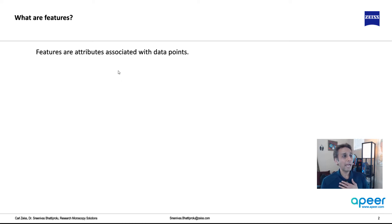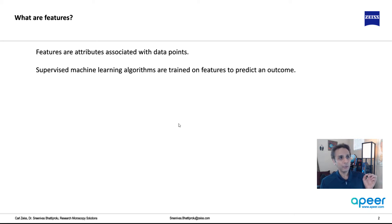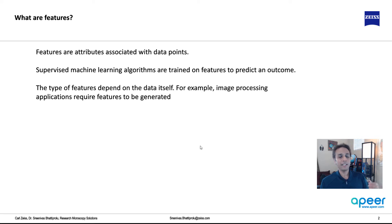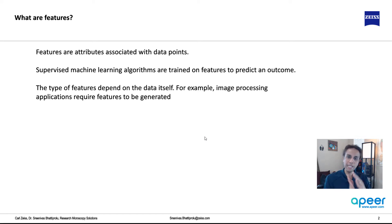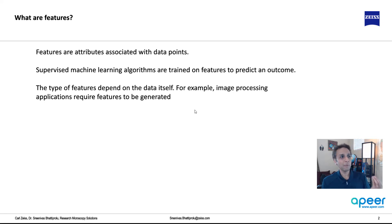Features are attributes associated with your data points. For supervised learning, you need these to train an algorithm so you can predict an outcome. The features depend on the data itself. In image processing, with your eyes you can see that things are round, star-shaped, or needle-shaped — but how does a computer understand that? For that you need to extract the features, maybe using edge detectors or something similar to extract that information.